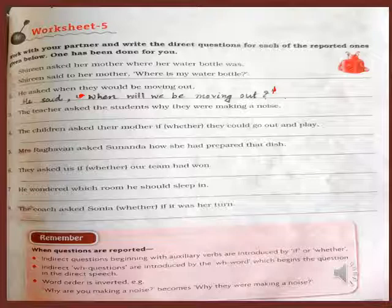'He asked when they would be moving out.' He said, comma, inverted comma open, 'When will we be moving out?' Question mark and inverted comma close. In the same way, dear students, try to do the remaining ones.